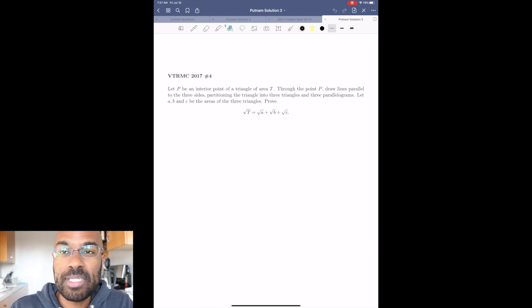Today we're going to talk about the Virginia Tech Regional Math Competition problem number four on the 2017 exam. The thing I like about this problem is a really interesting relationship between the area of a triangle and areas of dissections within it. So the problem says the following.